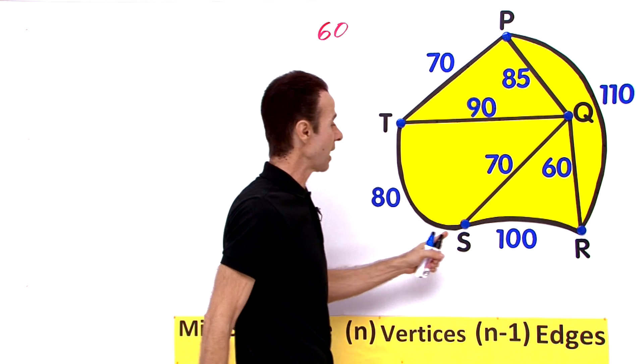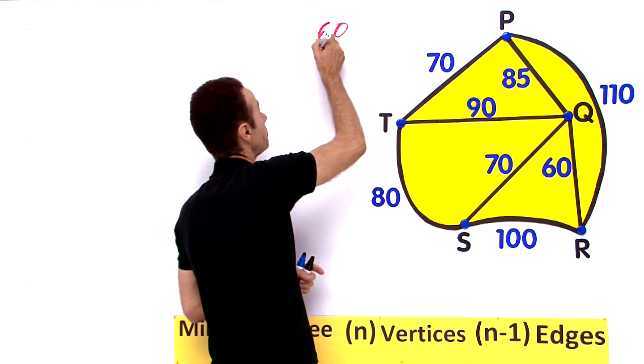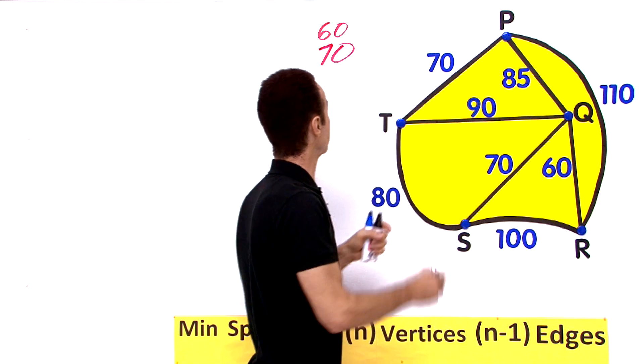So let us sort them in order. So 60 is the lowest. Do we have 65? Do we have 70? Yes we have 70 right there.